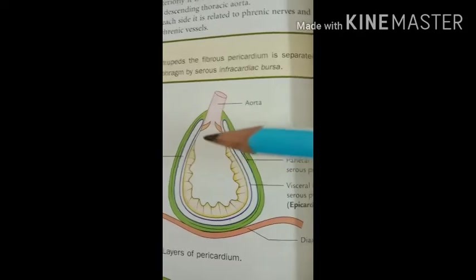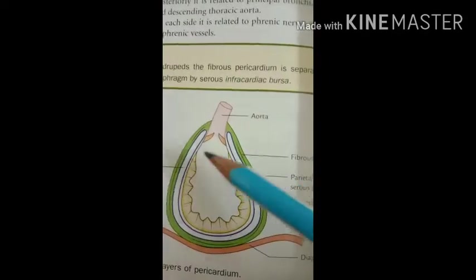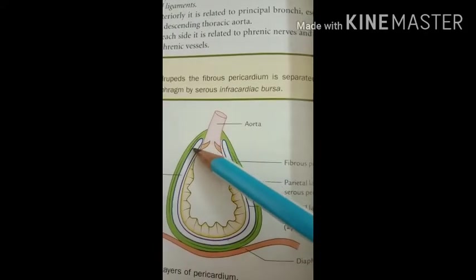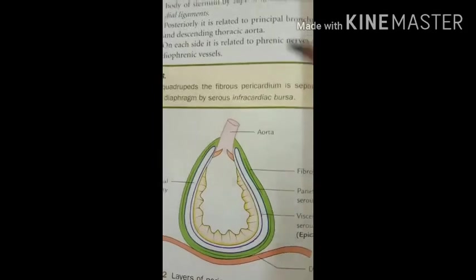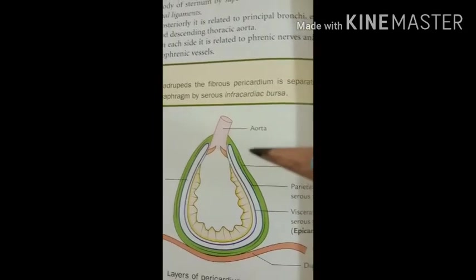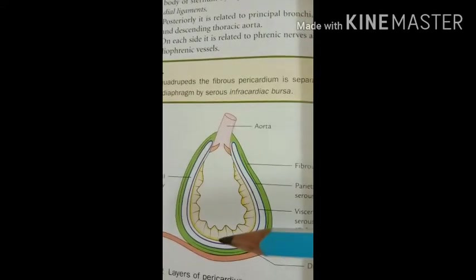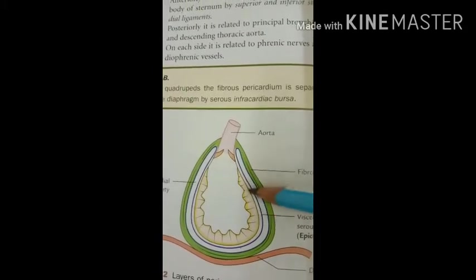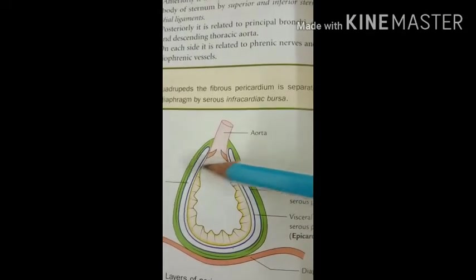The parietal layer of the serous pericardium gets attached to the inner surface of the fibrous pericardium. You can see here the green-colored fibrous pericardium and the parietal layer of the serous pericardium attached to its inner surface. The visceral layer gets adherent to the outer layer of the heart to form the epicardium — this layer is also called the epicardium.